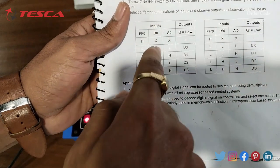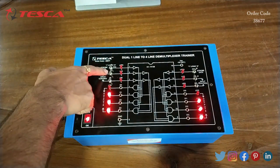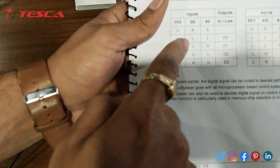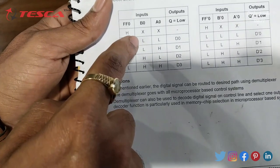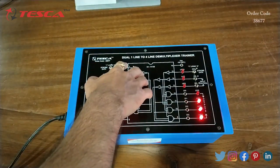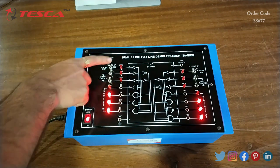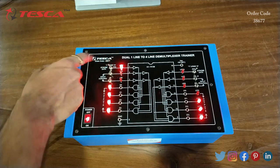First we have inputs FF0, B0 and A0. This is FF0, A0 and B0. When we keep FF0 at high... currently FF0 is at low as this LED is not glowing, indicating FF0 is low or 0. Now we give FF0 high or 1.